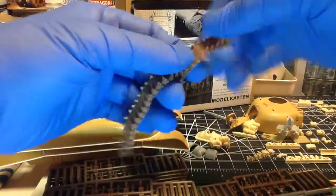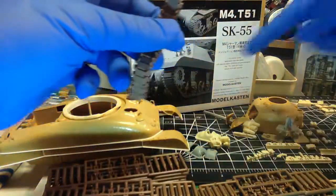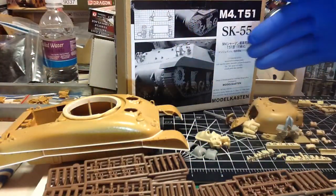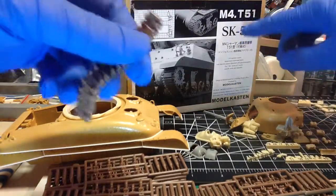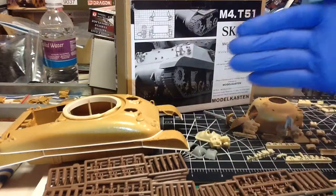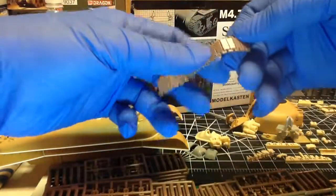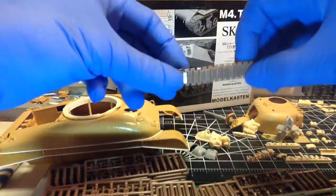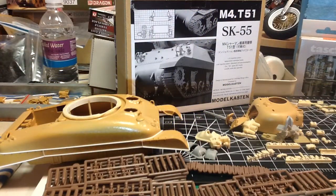And again, it depends on how much glue you put on the end connectors there, on the attachment points. Anyway, I wanted to show you that, get an idea of these Model Kasten M4 T51 tracks for the Sherman tank, 1/35th scale. Anyway, I'm happy to show that to you and like I said, welcome to the jungle baby.